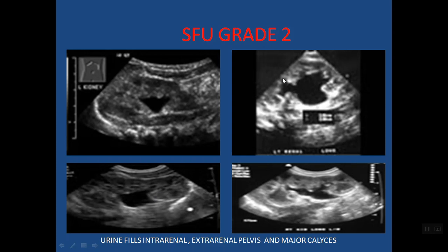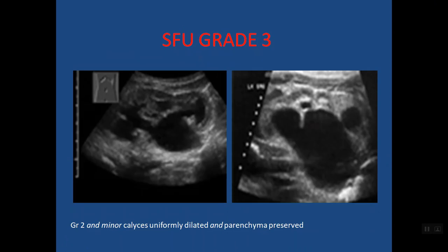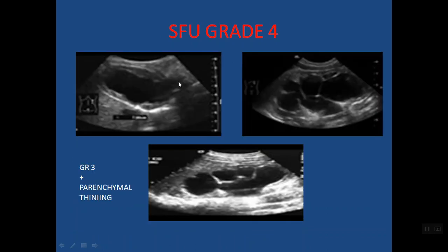The Society for Fetal Urology proposed a five-point numerical grading system based on the postnatal appearance of the renal pelvis, calyceal system, and renal parenchyma. Grade zero is absolutely normal, ranging through to grade four where there are parenchymal changes. Grade zero is a normal kidney with no splitting of the renal sinus. Grade one shows barely splitting of the renal sinus — between two echogenic lines there is an echoic line.